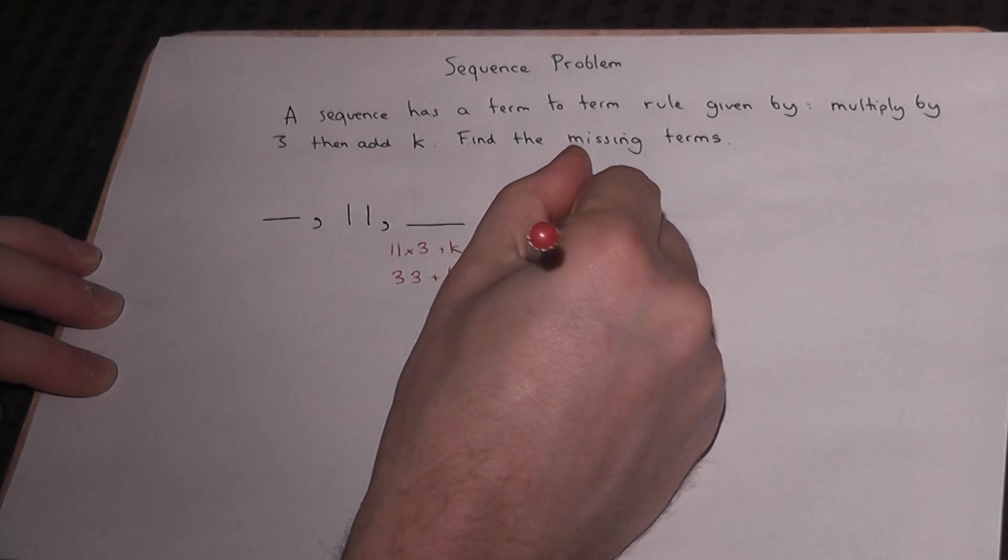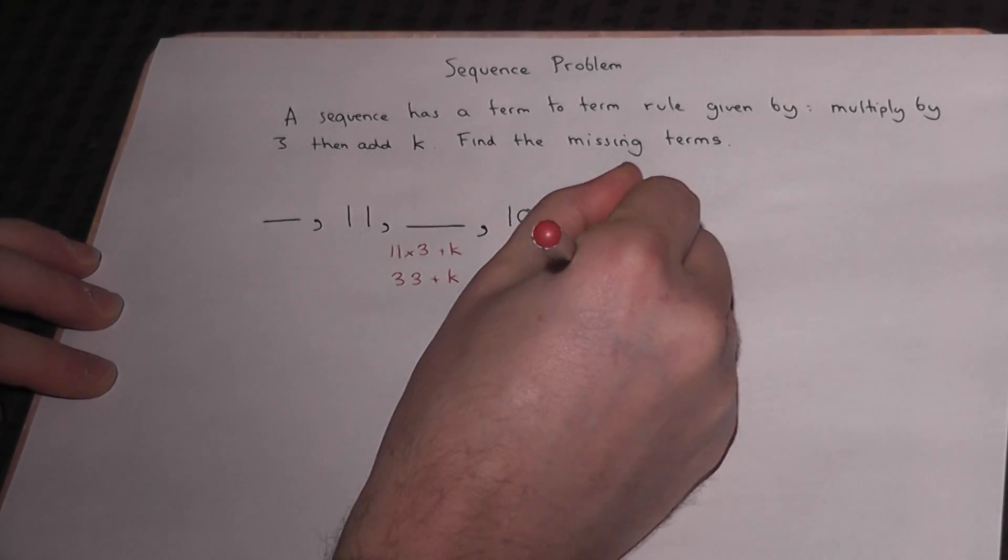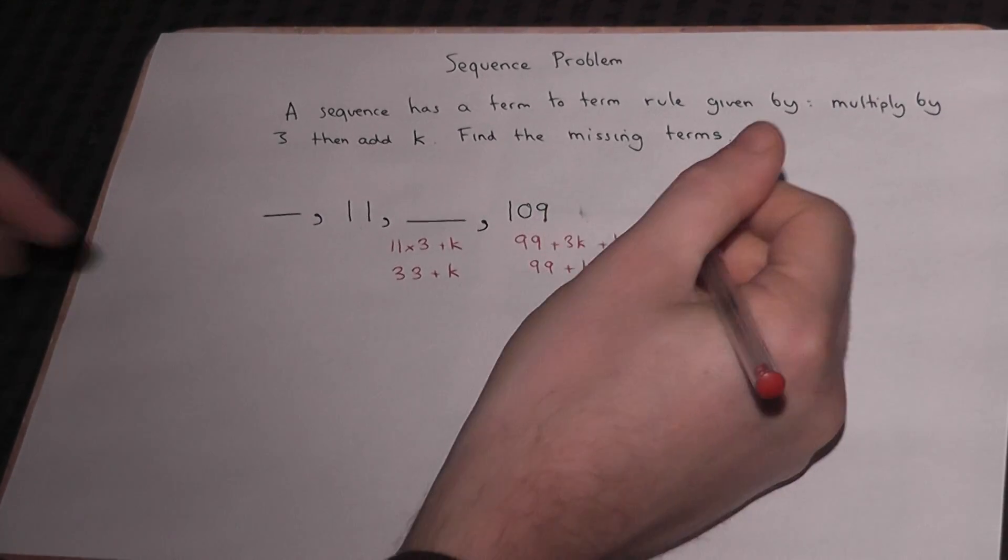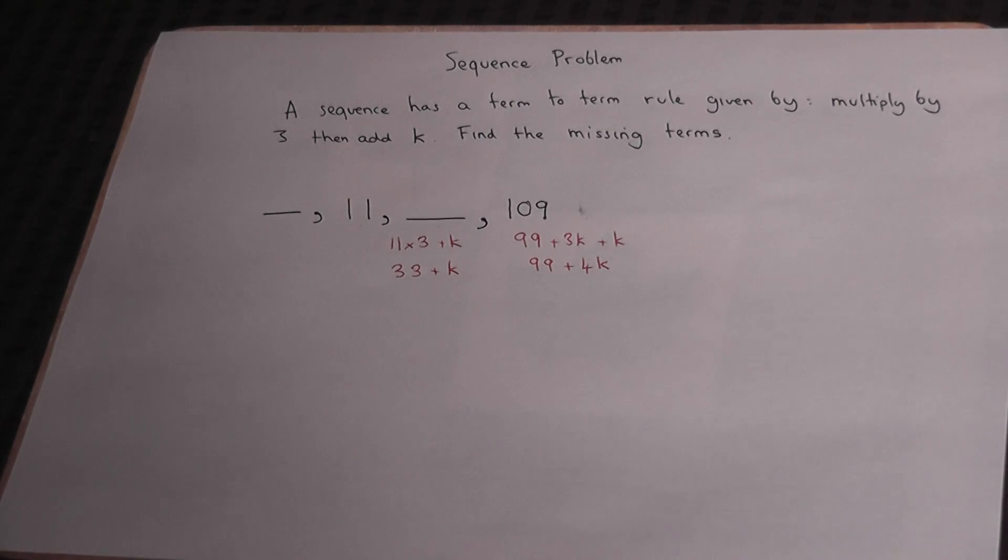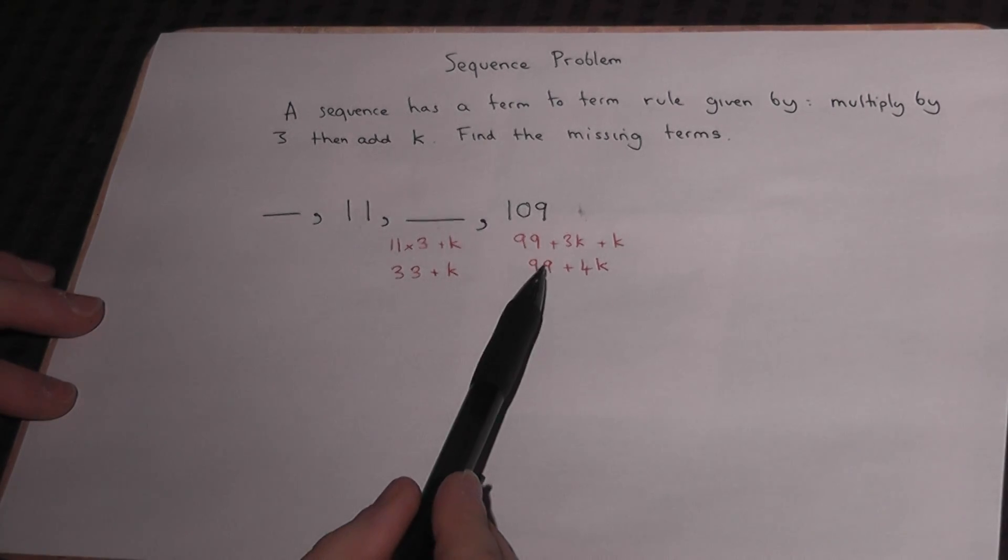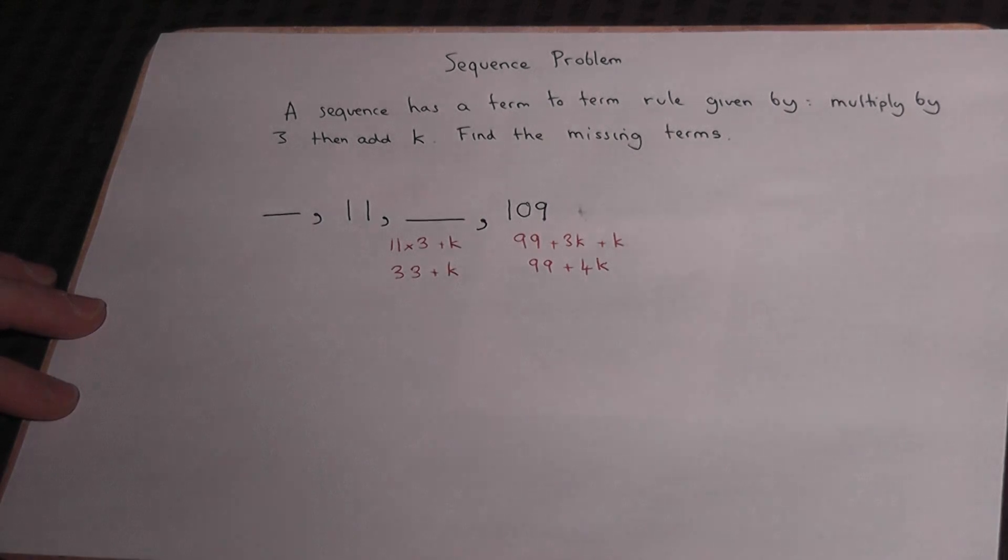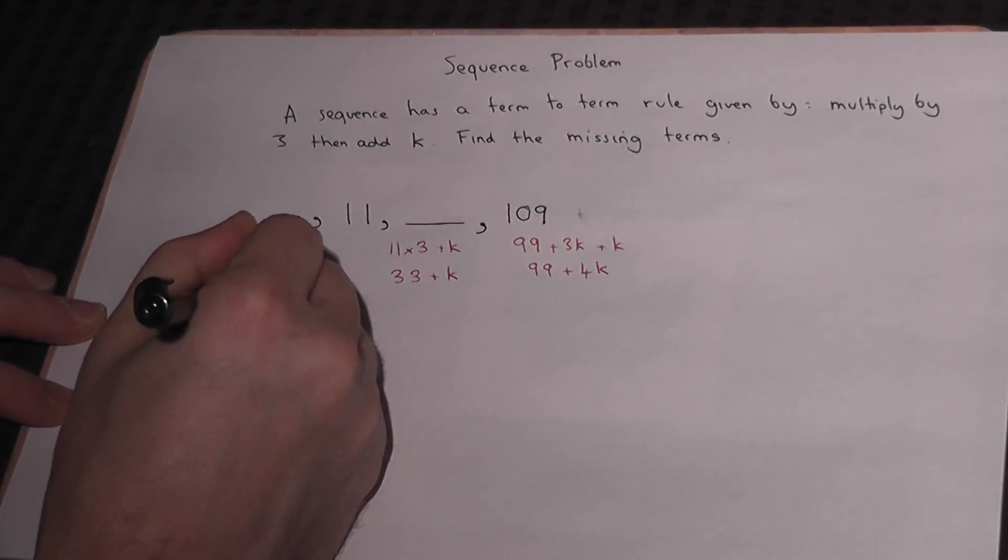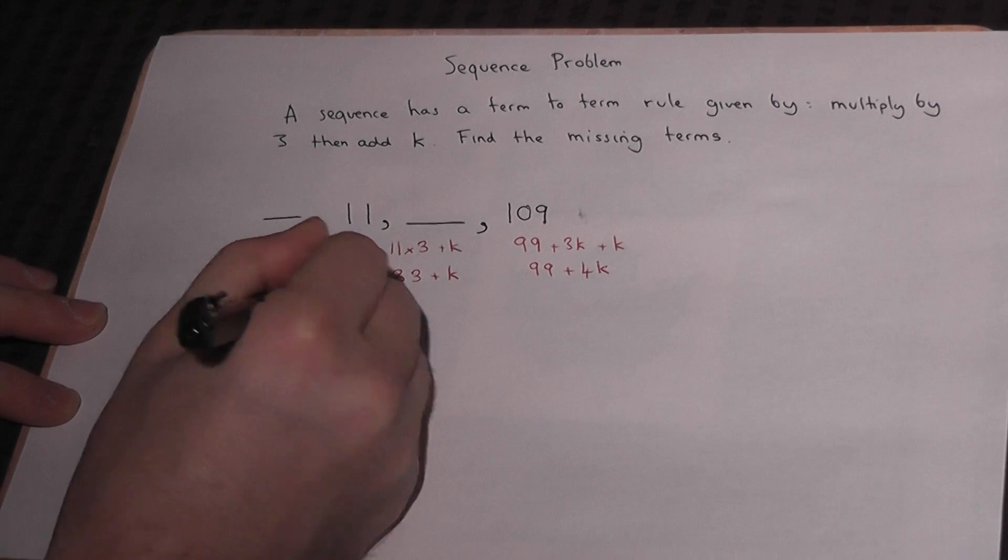And this goes down to 99 plus 4k. Now if we just compare this with this, we have 109 must equal 99 plus 4k. So 109 equals 99 plus 4k.